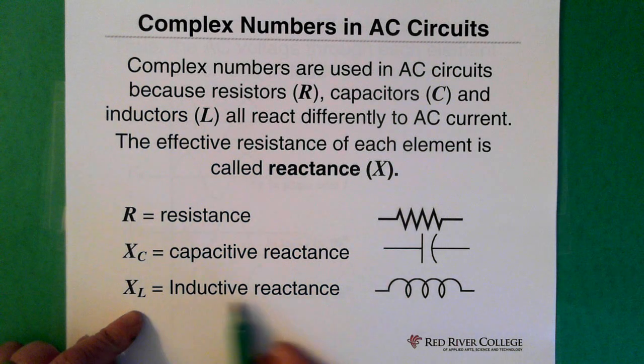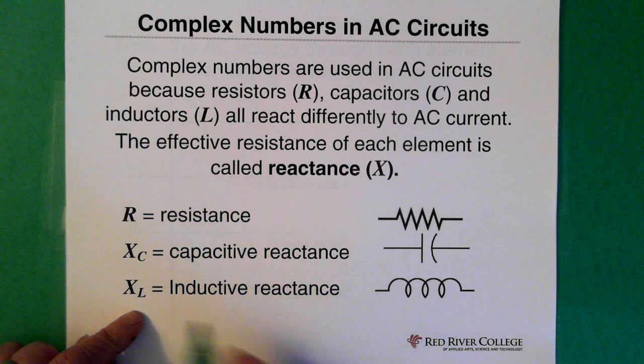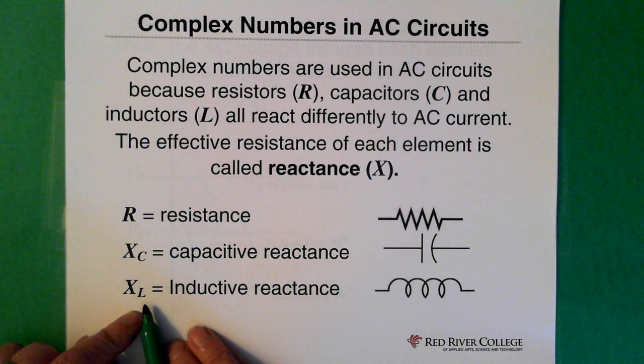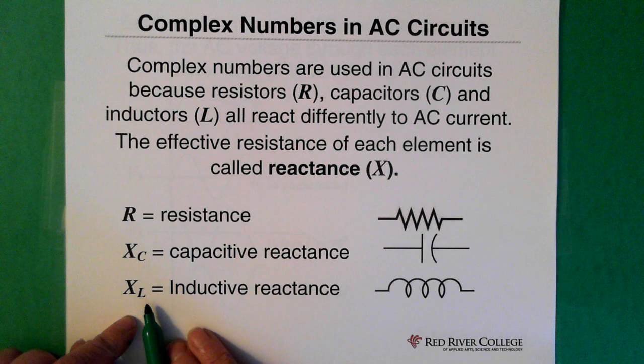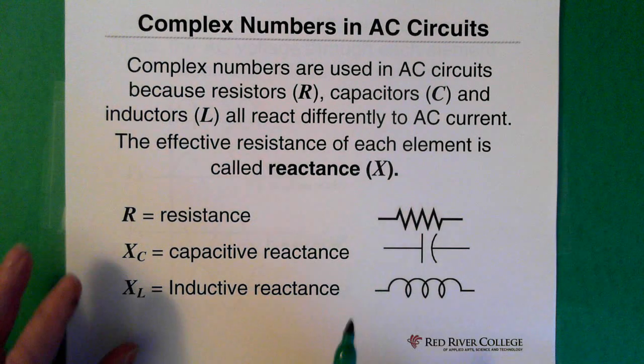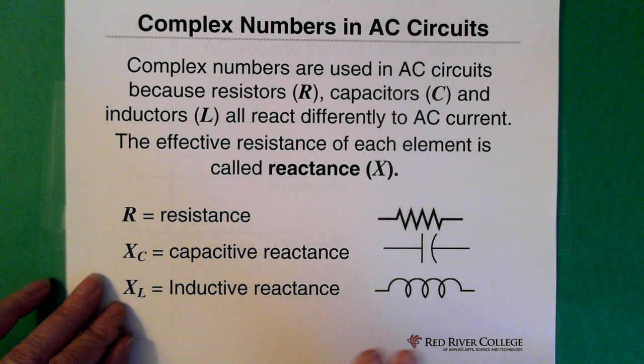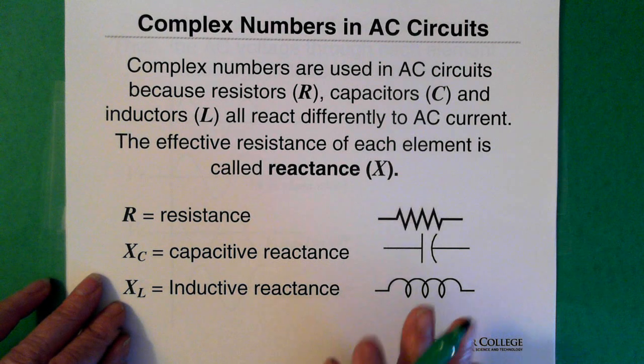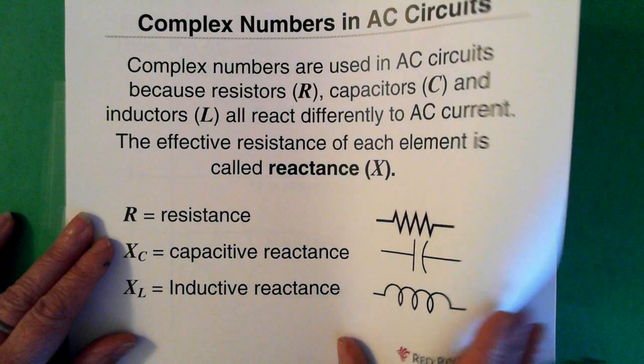The symbol for an inductor is this one and the inductive reactance is XL. That again is a sort of a kind of a resistance, an effective resistance that we use in an AC circuit in order to solve for the information about the inductor.